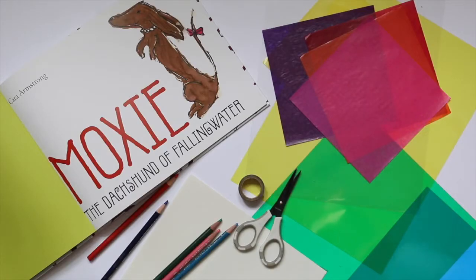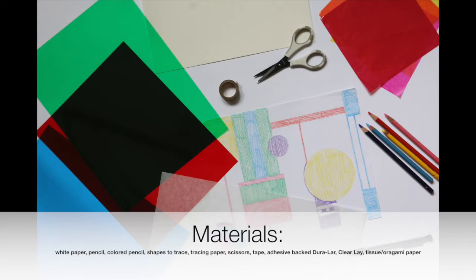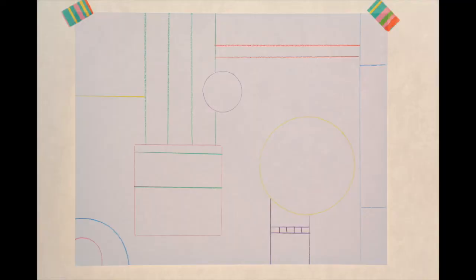The first step after viewing some of Frank Lloyd Wright's stained glass windows is for the artist or student to design their own with plain white paper and colored pencils. It's great to put out a variety of shapes that the children can trace or just found objects. I used a sticky note pad for drawing my square, a ruler for my straight lines, and a roll of tape and some other round objects for a few different sized circles.